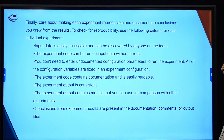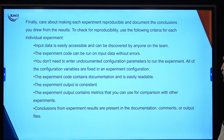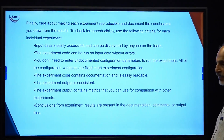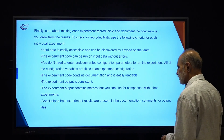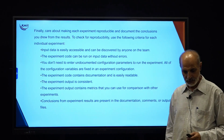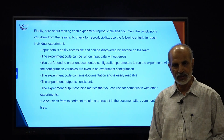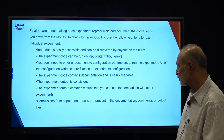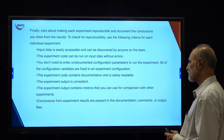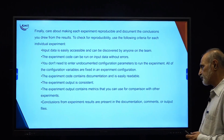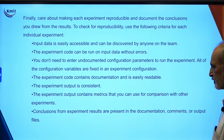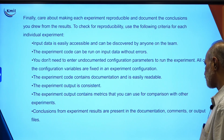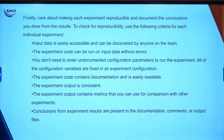You do not need to enter undocumented configuration parameters to run the experiment — all configuration variables are fixed in the experimental configuration itself. Experiment code should contain documentation and be easily readable. Documentation is a must, so that we keep track of the code and the changes we made. Experiment output is consistent and contains metrics that can be used for comparison with other experiments. Conclusions from experiment results are documented and outputs are written to a file.